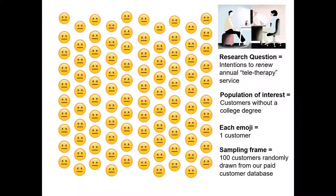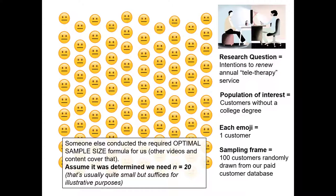For our sampling frame, the company randomly selected 100 currently paid-up customers from its customer database and presented them to us. These 100 emojis represent each one of those customers. Let's presume that somebody else has already calculated the optimal sample size we require for our later analysis. Other videos cover how to calculate this optimal sample size, but for now let's assume we need to sample 20 individuals from this sampling frame of 100. This is a rather small sample size, but it illustrates simple random sampling well enough.